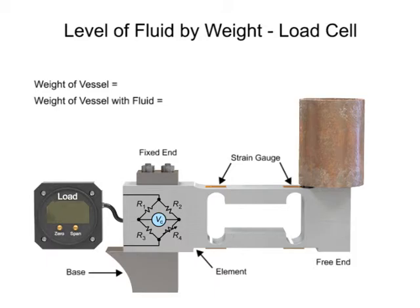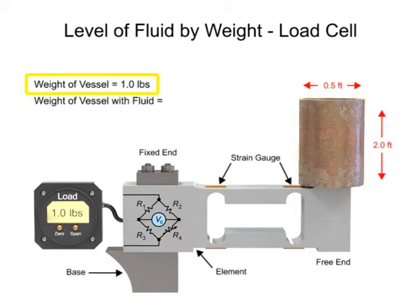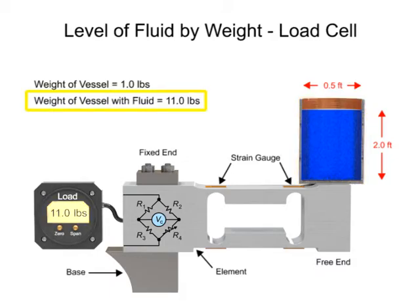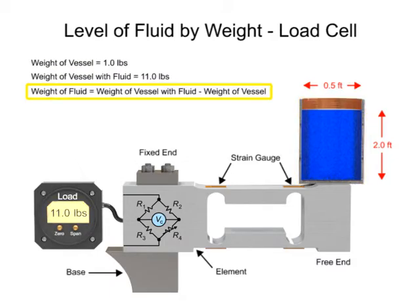As an example, to determine the level measurement of a column of water that is 2 feet tall with a diameter of 0.5 feet, the following steps are used. The first step is measuring the weight of the vessel. Next, measure the weight of the vessel with fluid. The weight of the fluid is determined by subtracting the weight of the vessel from the weight of the vessel with fluid.